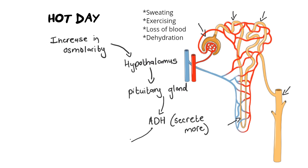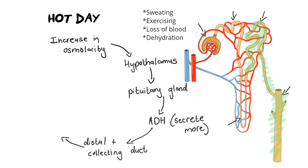This hormone needs to be sent to an effector — an organ — so that we can actually store the water and reclaim it. The ADH is sent to your distal convoluted tubule and your collecting duct in your kidney. That whole area becomes more permeable. So in our explanation, we need to say that the distal convoluted tubule and the collecting duct are the effectors. ADH makes the tubules more permeable to water, meaning we want to reabsorb more water back into the bloodstream.